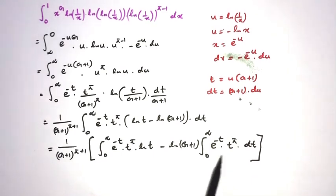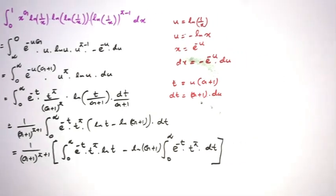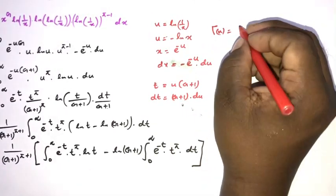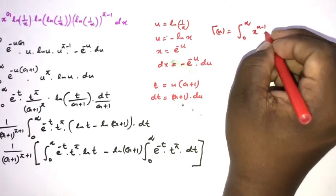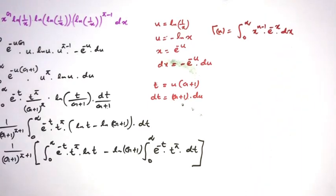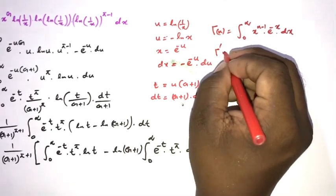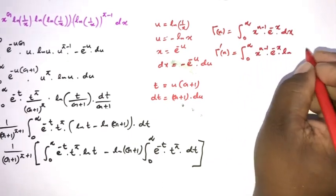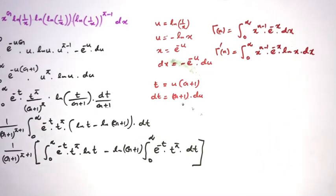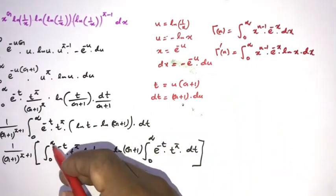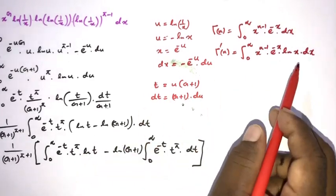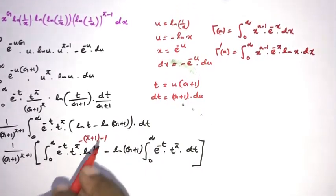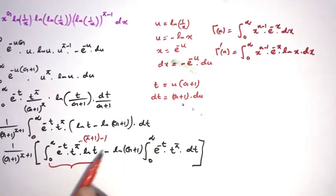We recognize the Gamma function: gamma(n) equals the integral from 0 to infinity of x to the n minus 1 times e to the minus x dx. Differentiating with respect to n gives gamma-prime(n) equals the integral from 0 to infinity of x to the n minus 1 times e to the minus x times natural log of x dx. Our first integral matches gamma-prime(pi plus 1), since t to the pi equals t to the (pi+1) minus 1.